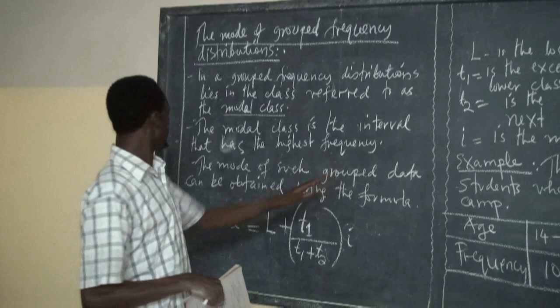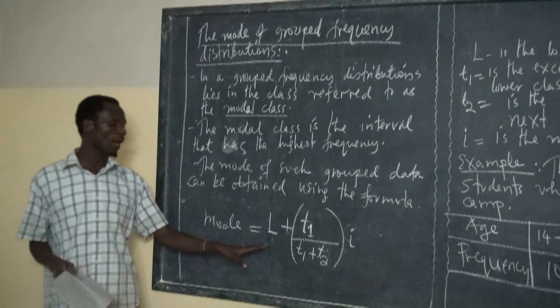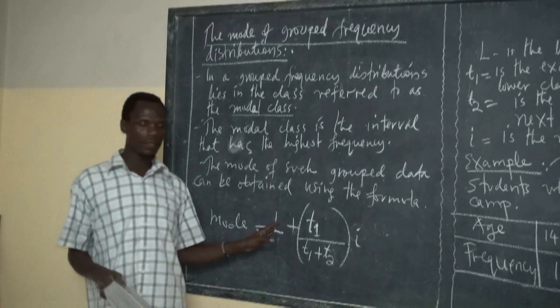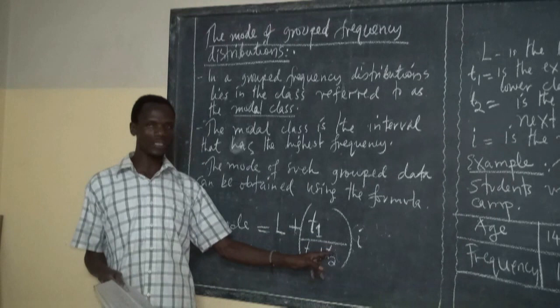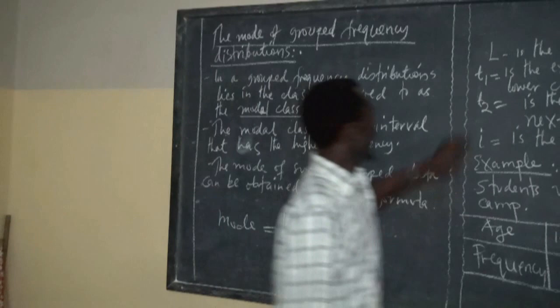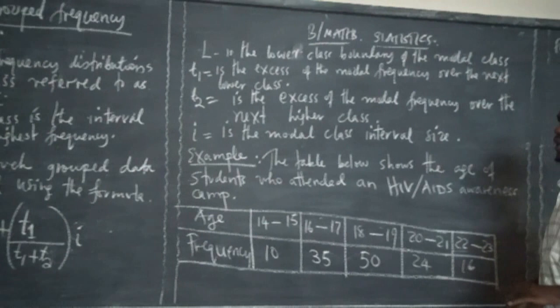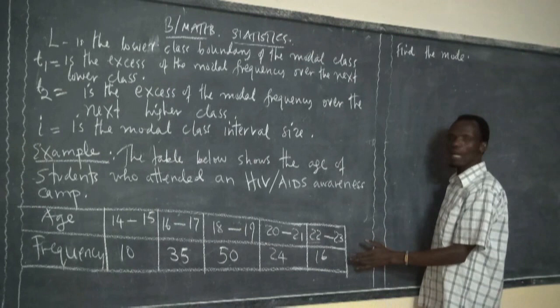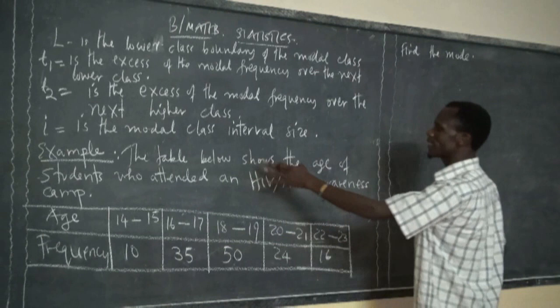The mode of grouped data can be obtained using the formula: Mode = L + (T1 / (T1 + T2)) × I. Where L is the lower class boundary of the modal class. Let us refer to an example so we can understand.